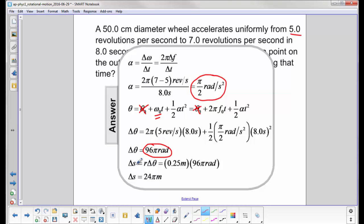To find the linear displacement, or the arc length, that would be r delta theta. Now here's the trick. Don't get caught. We said 50 centimeters, so you just want to go ahead and put in 0.5 meters. You know enough to change it to meters. However, that's the diameter. We need the radius. So you cut that in half, and then your final answer is your linear displacement is 24 pi meters.